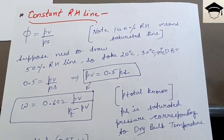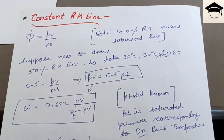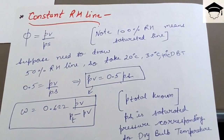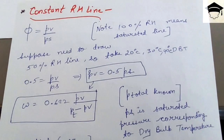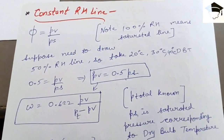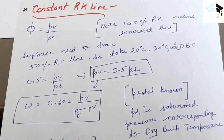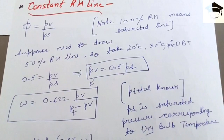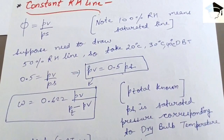To draw the 50% RH line, use the formula φ = PV / PS. Put φ = 0.5, so you get 0.5 = PV / PS, which gives PV = 0.5 × PS. Then use the formula ω = 0.622 × PV / (P_total − PV) and substitute the PV from above to find the corresponding omega value.